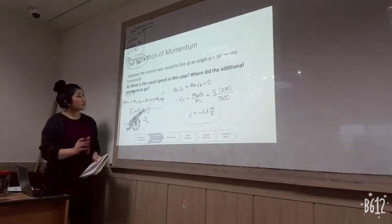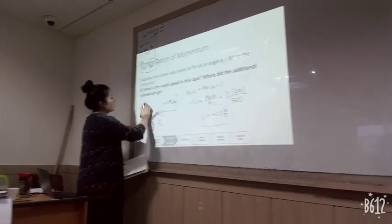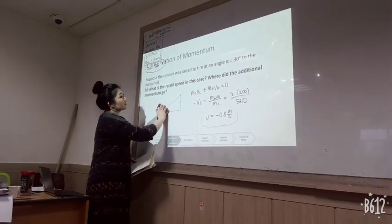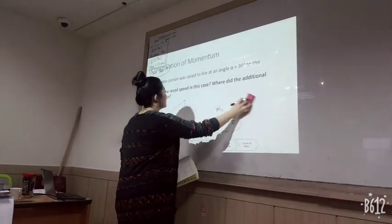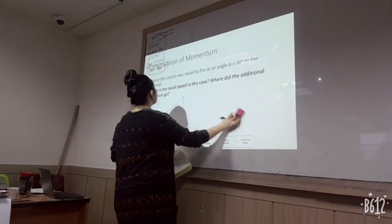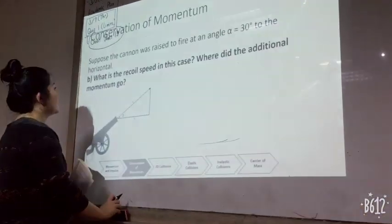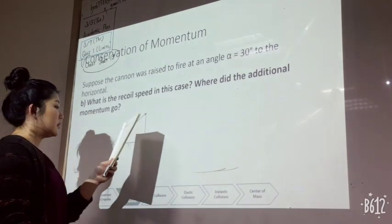Alright, for the next one we're gonna say, suppose that the cannonball then was raised to fire at an angle of 30 degrees to the horizontal. What is the recoil speed in this case, and where did the additional momentum go then? So for this one.